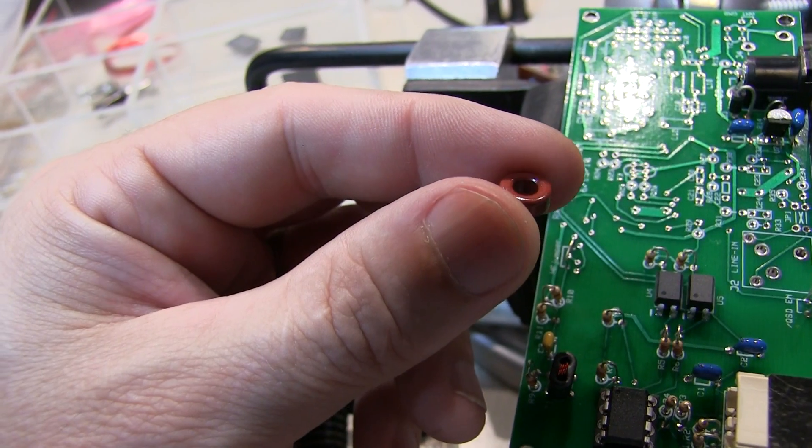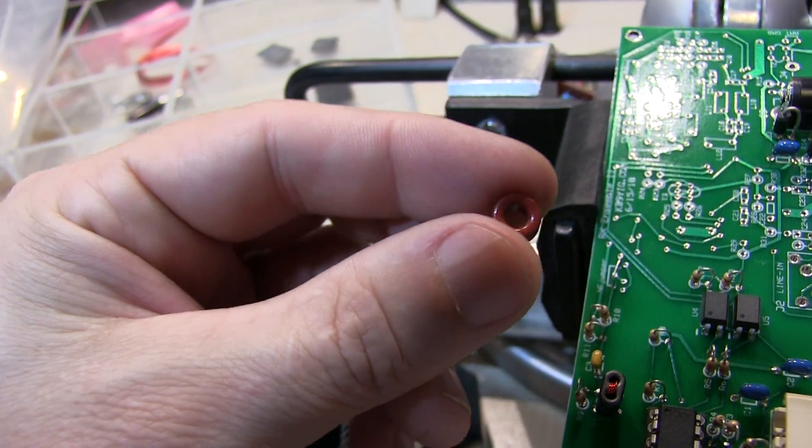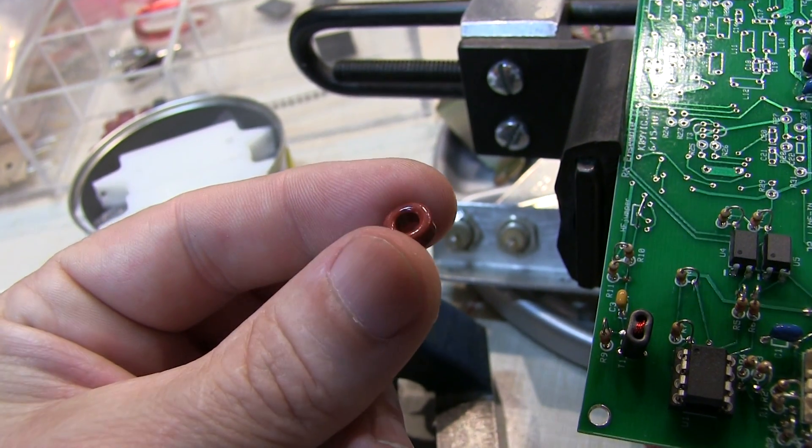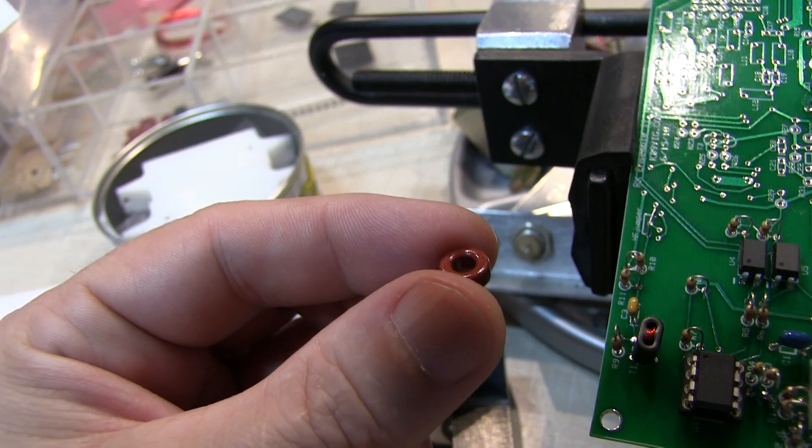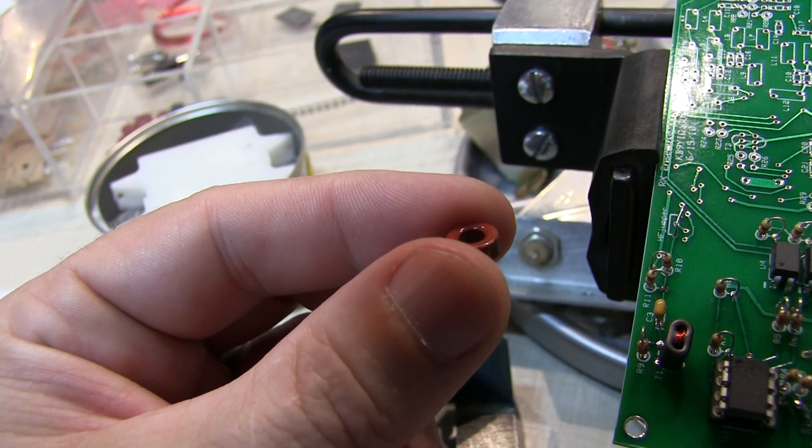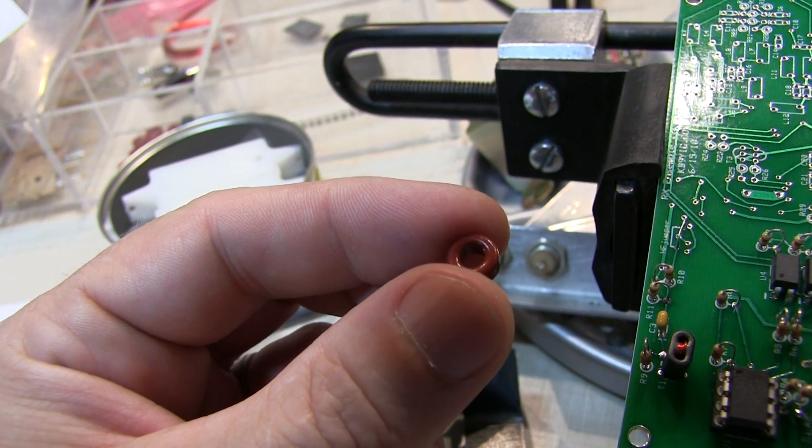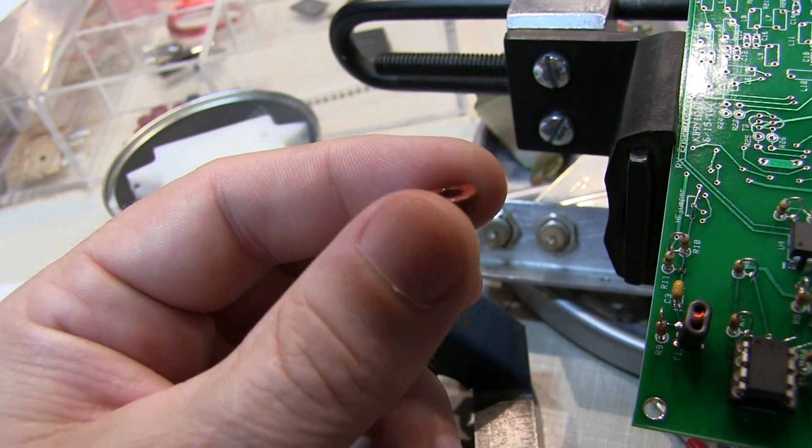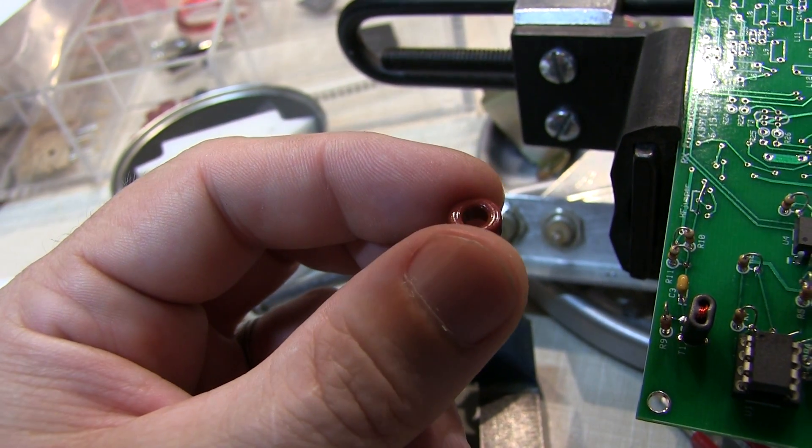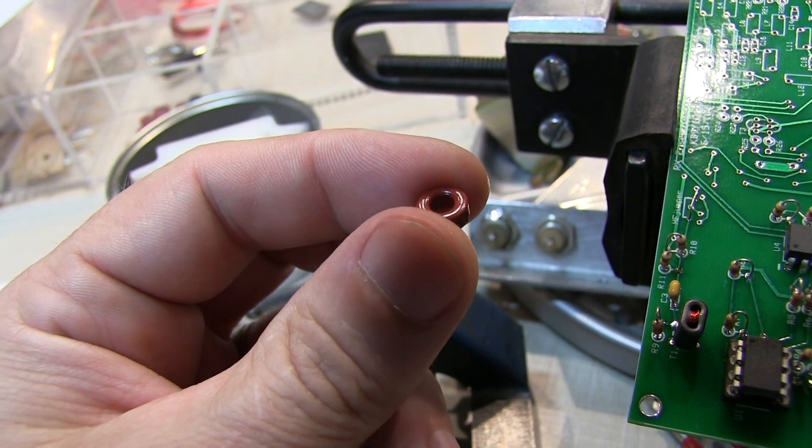There's lots of tables you can find by simply googling on the internet to get all kinds of information about how much inductance you're going to get per turn, how many inches of wire per turn you're going to need for a given core size and type.